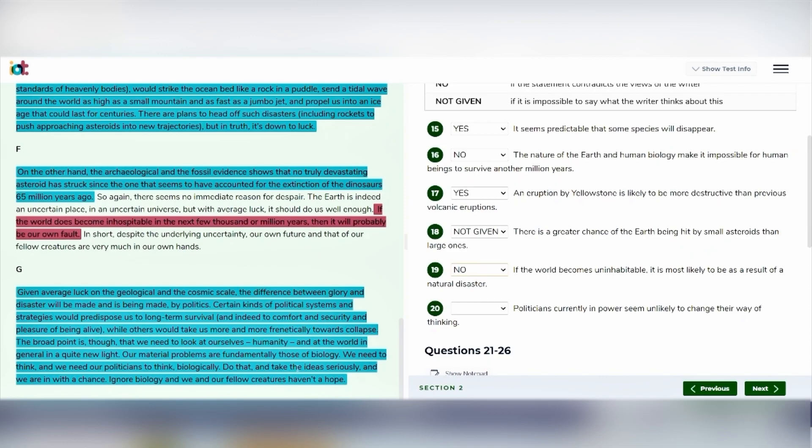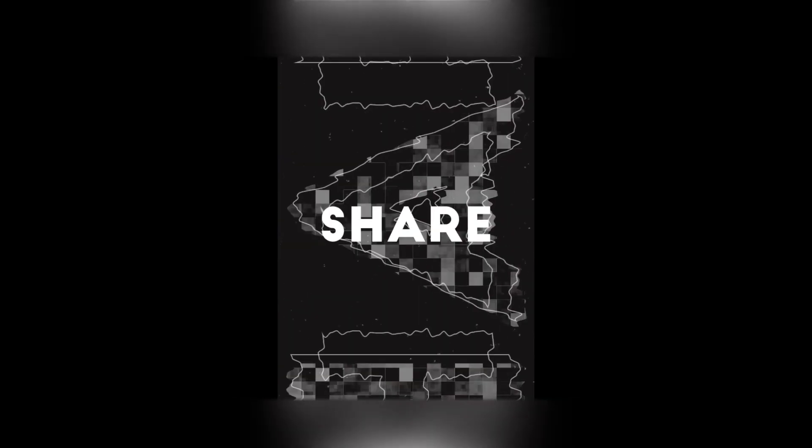So in all of these lines that I've read here, there's nothing where it is written clearly that politicians in power are likely to change their way of thinking or something like that. So we cannot make a decision about the statement that is in question 20. Either we cannot say it's a yes or a true statement or it's a false statement. We can just say that it's not given in the passage. Do like this video and subscribe to my channel. Thanks for watching.